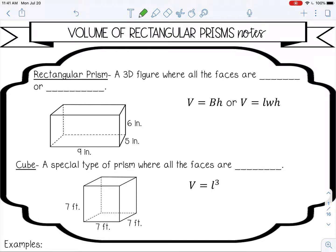Welcome to this lesson on the volume of rectangular prisms. A rectangular prism is a three-dimensional figure where all the faces are squares or rectangles. So you see an example of a rectangular prism below.